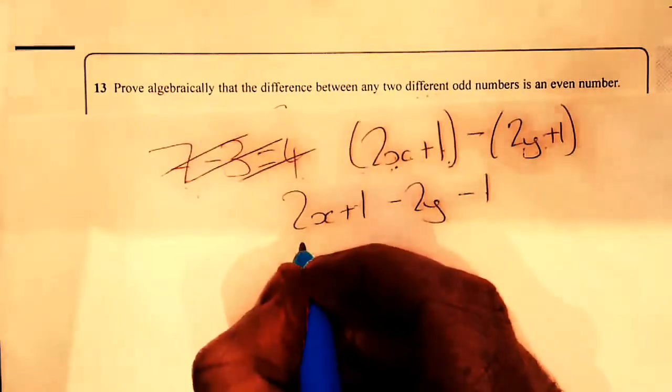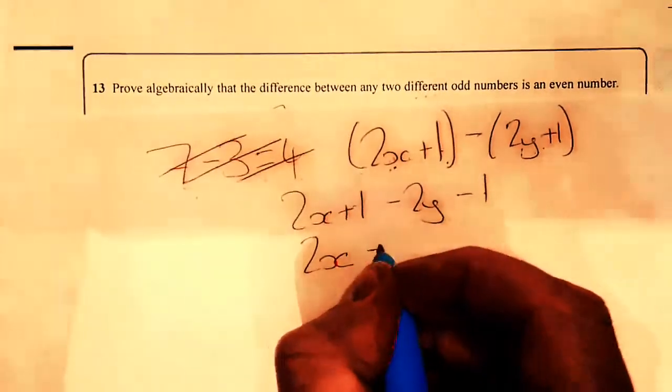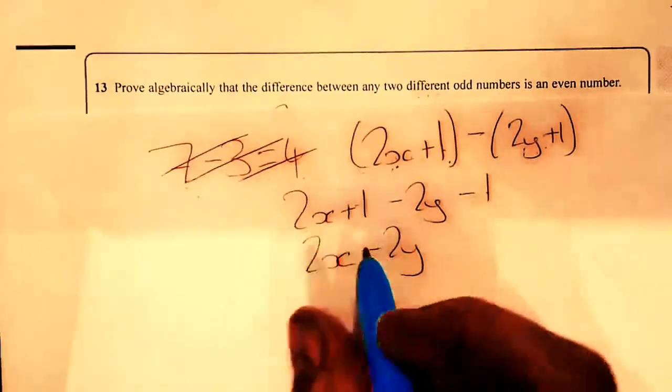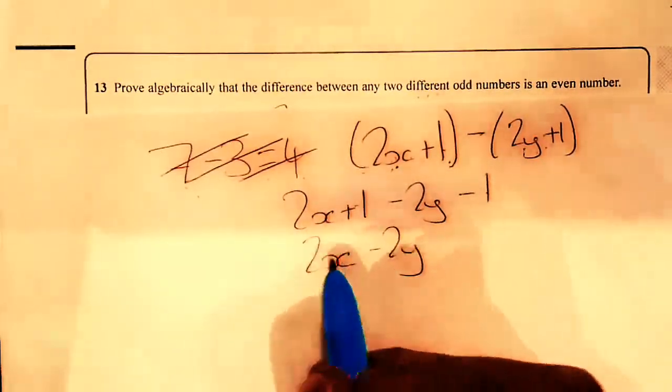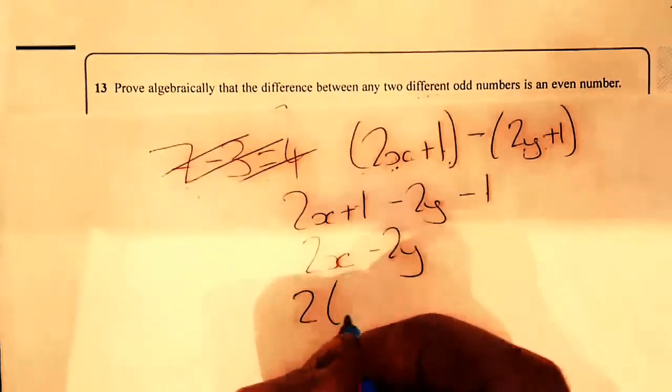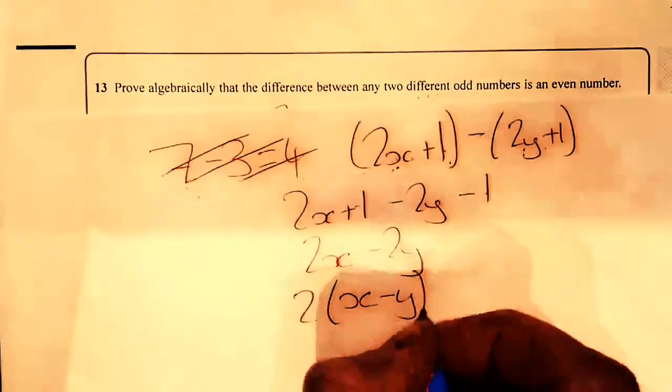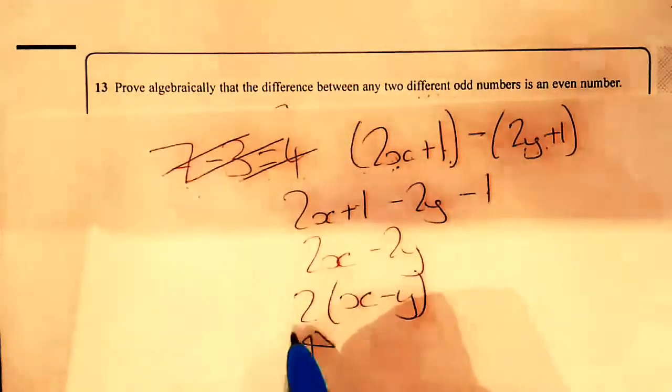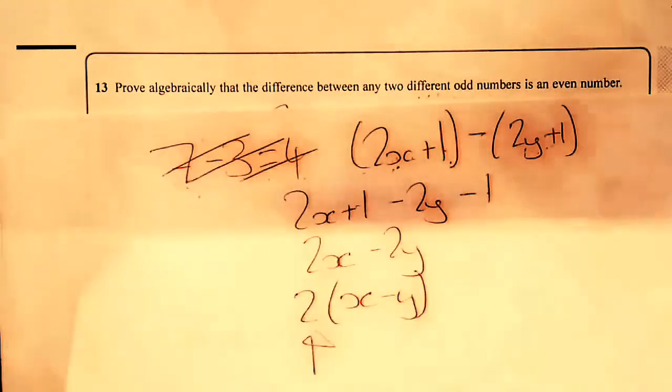These two count to that, which gives me 2x minus 2y. But then I have to prove this is even. I can factor 2 out, two brackets, x minus y. Now, this two here proves that it's even. Done.